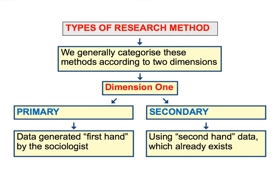What we're going to start to look at in the next few screencasts is the use of secondary data — in other words, the use of information which already exists — the use of second-hand data that's been produced by somebody other than the sociologist doing the research.